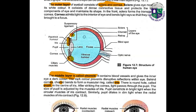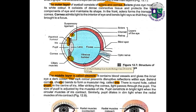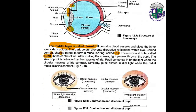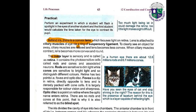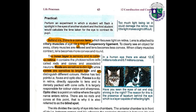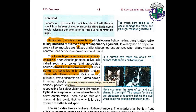The inner layer is called the retina. It contains photosensitive cells called rods and cones and associated neurons. Rods are sensitive to dim light, while cones are sensitive to bright light and allow us to distinguish different colors.